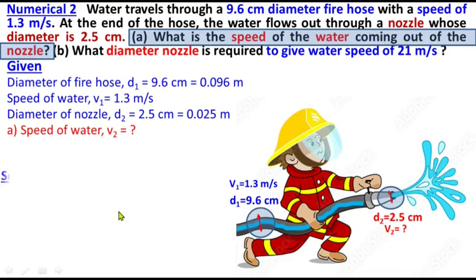So what is the solution? We use the continuity equation: A₁V₁ equals A₂V₂. Substituting for area, since area equals πR², we write πR₁²V₁ equals πR₂²V₂, where subscript 1 refers to the hose and subscript 2 refers to the nozzle.